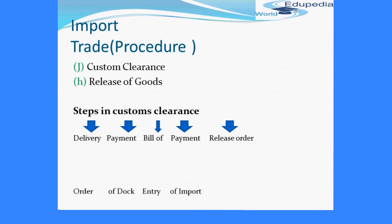Next is payment of dock charges. The importer submits two copies of a duly filled form called 'Application to Import' to the landing and shipping dues office, which collects dock charges and returns one copy as a receipt known as Port Trust Dues Receipt. Then the importer fills in the Bill of Entry in triplicate for assessment of customs import duty, with complete details of the imported goods declared in it. The importer then submits one copy of the Port Trust Dues Receipt and two copies of the Bill of Entry along with other required documents to the customs authorities and makes payment of import duty.